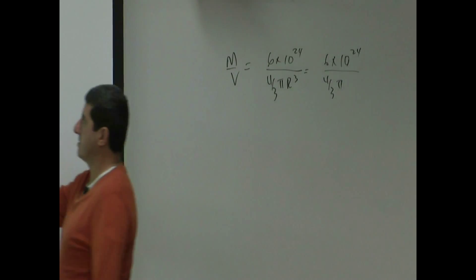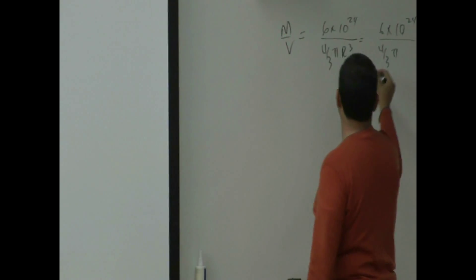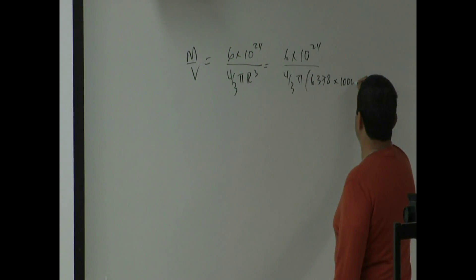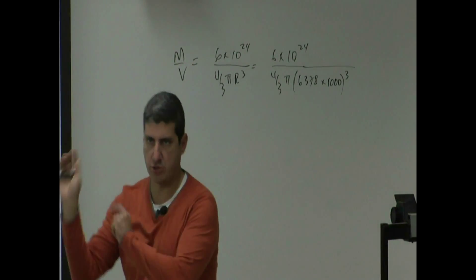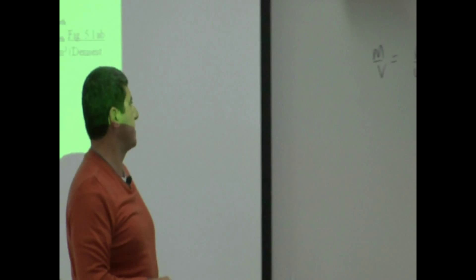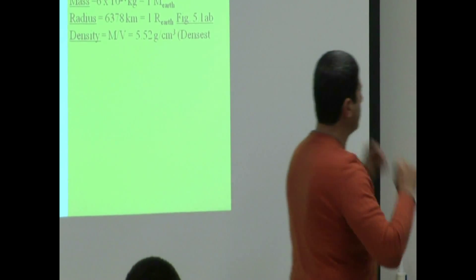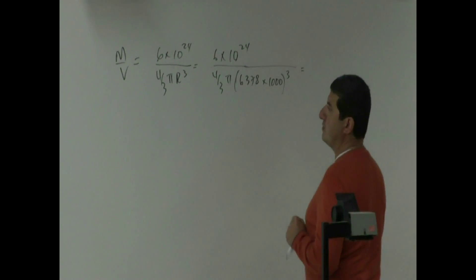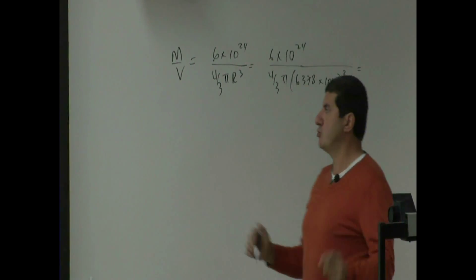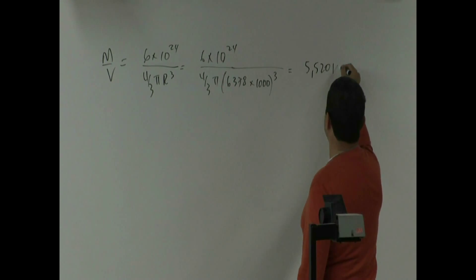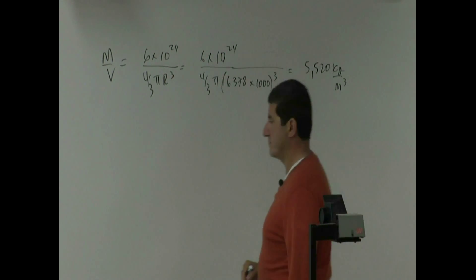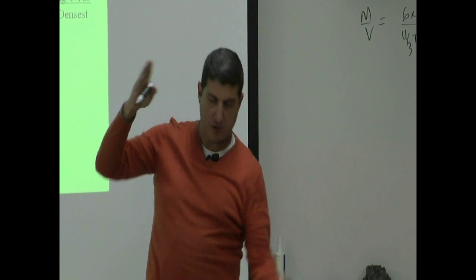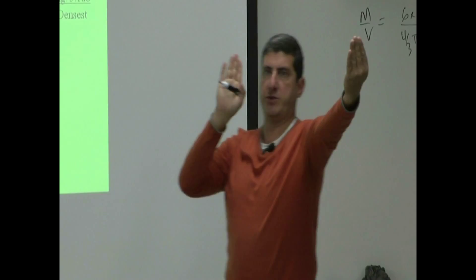You take the radius of the Earth, 6,378 kilometers, keeping in mind that each kilometer is 1,000 meters, then cube it. Plugging 6 times 10 to the 24th divided by 4/3 pi times 6,378 cubed into the calculator gives you the result in units of kilogram per cubic meter — roughly 5,520 kilogram per cubic meter. That means one cubic meter of Earth (a meter by a meter by a meter) has a mass of 5,520 kilograms.